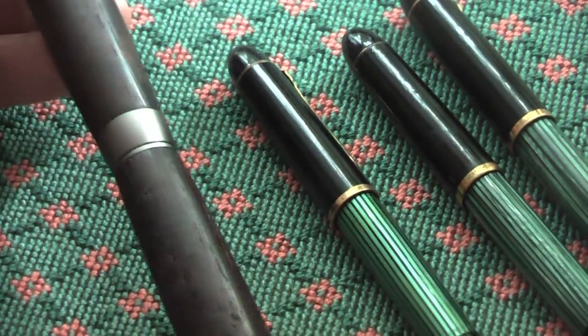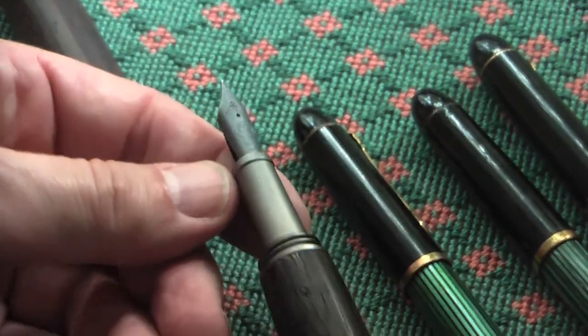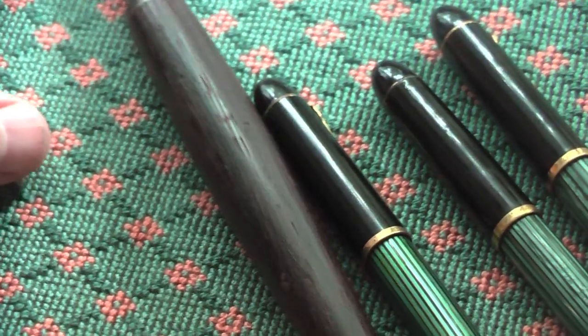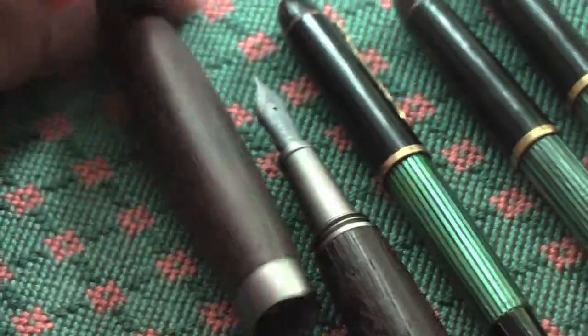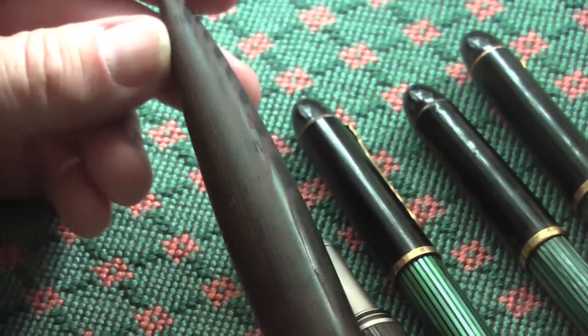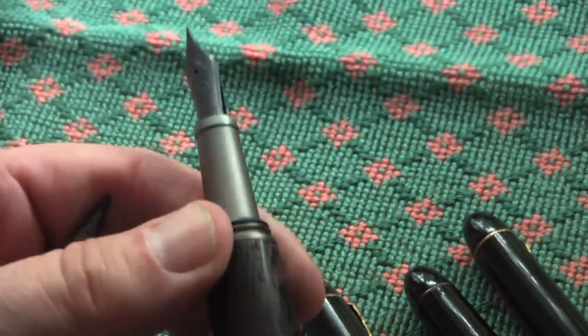This one comes with a titanium nib and the wood is wenge. You can see the typical wenge wood, it continues here.